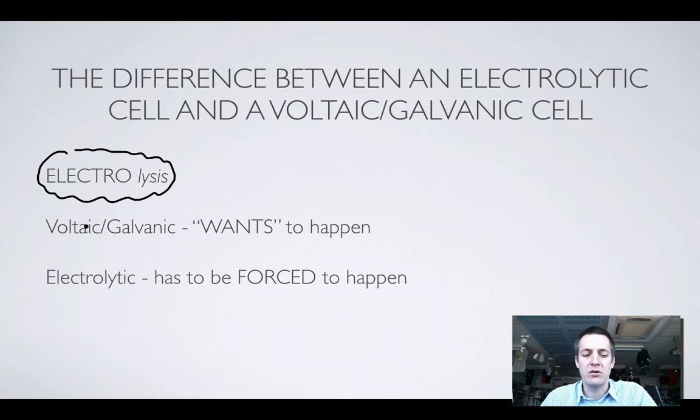Now in a voltaic or a galvanic cell the reactions want to happen. So hopefully you've looked at using your datasheet to predict whether reactions are feasible or not and in doing so you can decide what reactions will take place in a battery or in a galvanic cell. Now in an electrolytic cell the opposite of what wants to happen happens. And that's because we're forcing things to go a certain way.